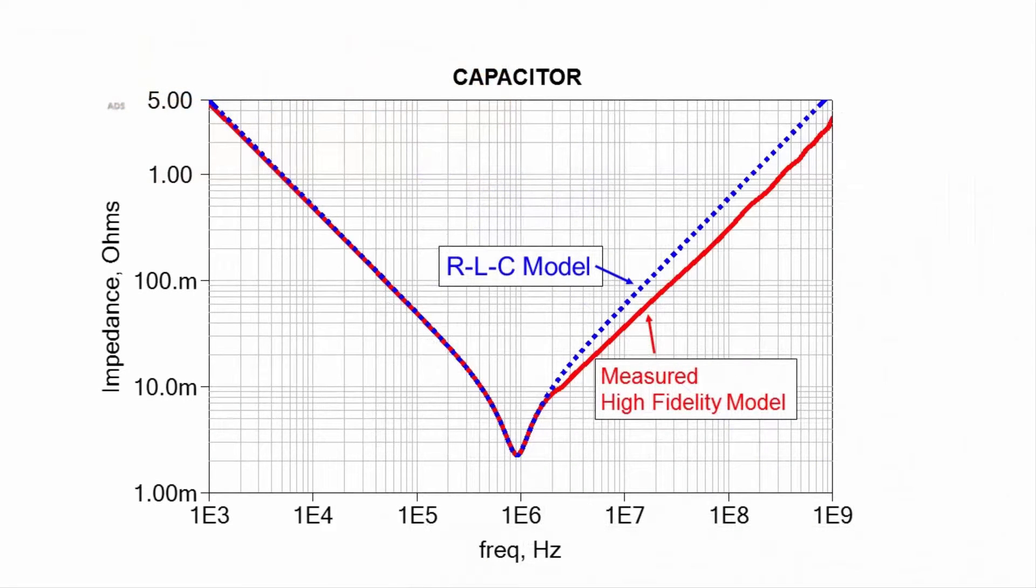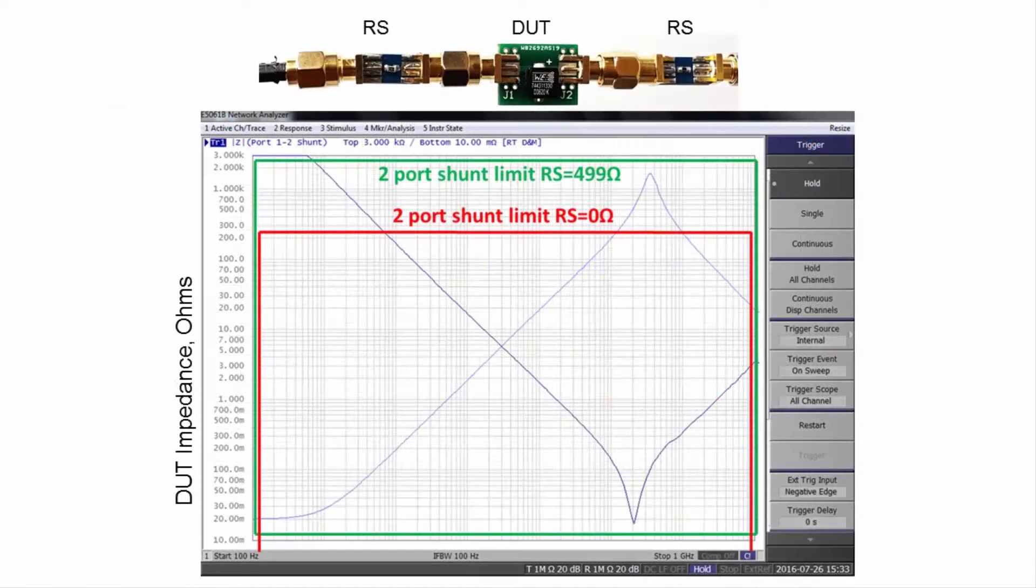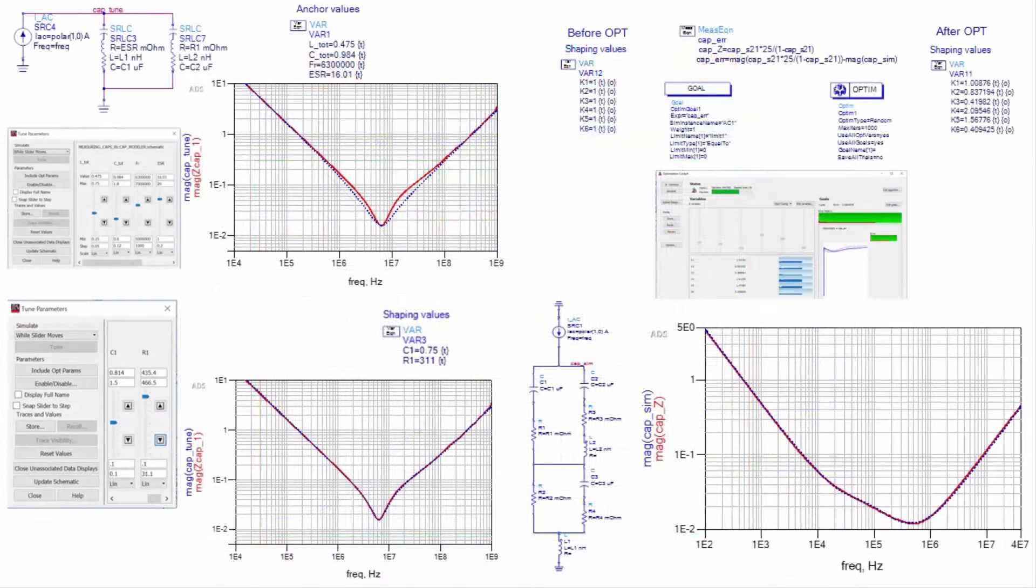In this video, we showed how accurate capacitor data can minimize the number of capacitors required, saving cost and valuable printed circuit board area. We showed how to optimize measurement fidelity by adding series resistors to each port, and we showed how to create bulk and ceramic broadband SPICE models from the measured data.